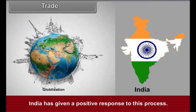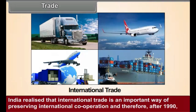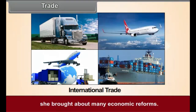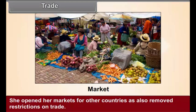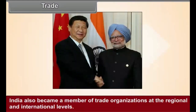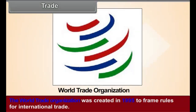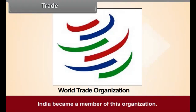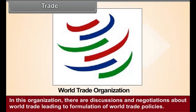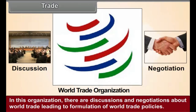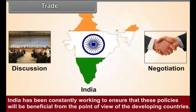Trade. Globalization has led to an integration of economies. India has given a positive response to this process. India realized that international trade is an important way of preserving international cooperation and therefore, after 1990, she brought about many economic reforms. She opened her markets for other countries and also removed restrictions on trade. India also became a member of trade organizations at the regional and international levels. The World Trade Organization was created in 1995 to frame rules for international trade. India became a member of this organization. In this organization, there are discussions and negotiations about world trade leading to formulation of world trade policies. India has been constantly working to ensure that these policies will be beneficial from the point of view of the developing countries.